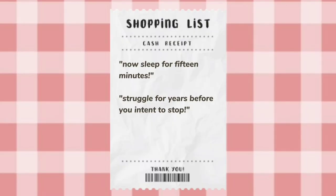The third type is zero anaphora or ellipsis. For example: 'Now sleep for 15 minutes,' or 'Struggle for years before you intend to stop.' The words given are clear and firm, and there is no ambiguity in these sentences.